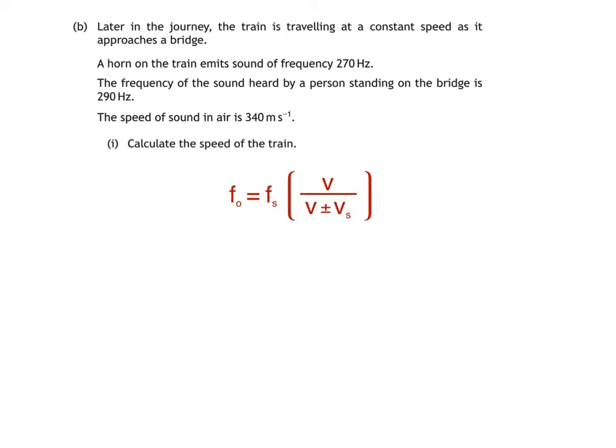I'll substitute these values into the equation before working out what to do with the bottom line. When the train moves towards the observer, the observed frequency F₀ is greater than the actual source frequency Fs. To make this the case, we want a lower number in the bottom line, so we must be using the minus sign.